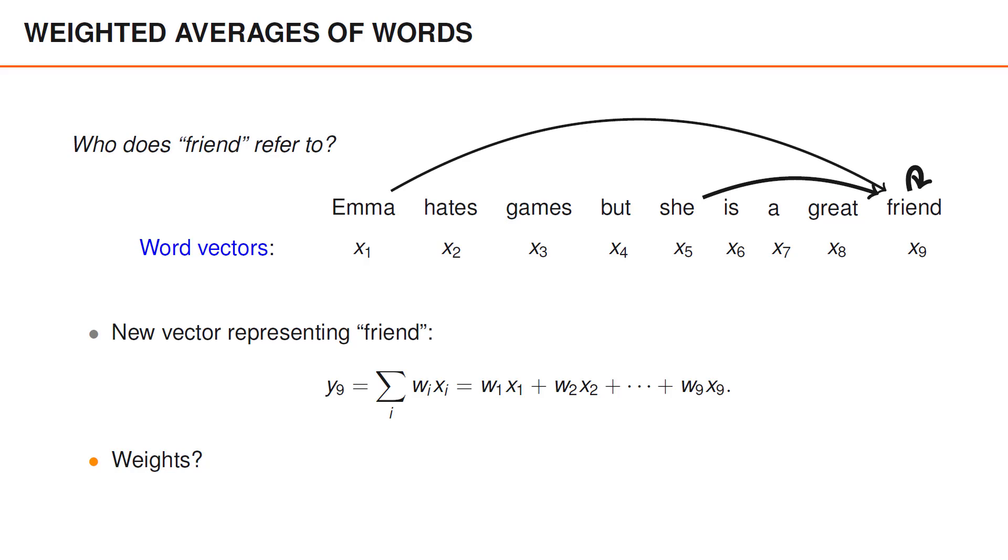That is, whereas the original word embedding for friend, x9, is generic and designed to make sense in any context where that word might appear.